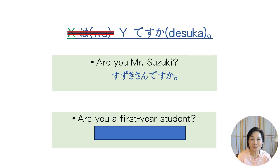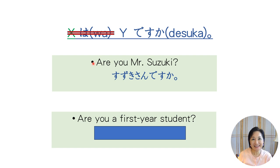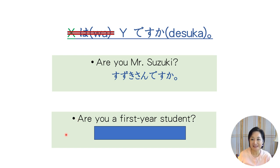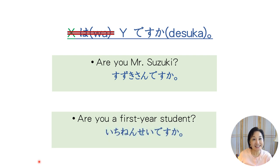Let's practice asking questions without using the word anata. How do you ask 'Are you Mr. Suzuki?' — simply say Suzuki-san desu ka? How about 'Are you a first-year student?' — ichi-nen-sei desu ka? いいですね。